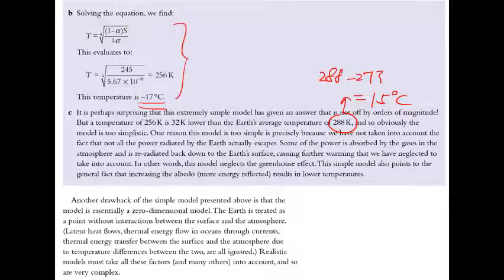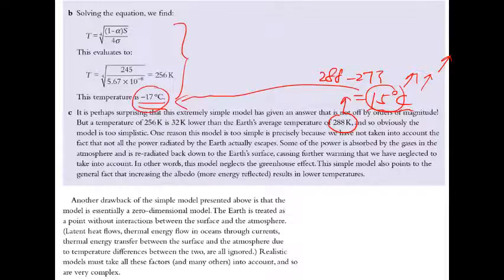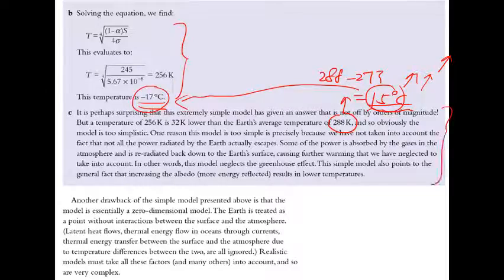The discrepancy — actual 15°C versus calculated −17°C — prompts the question: why is the actual temperature so much higher? Either the Earth receives more energy than assumed, or it emits less energy than predicted. This leads to the greenhouse effect explanation. The model is still a good approximation — not off by an order of magnitude — and is a useful tool for understanding other planets.